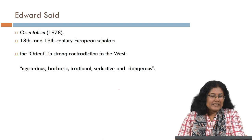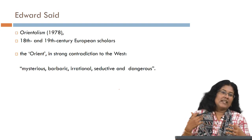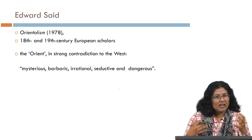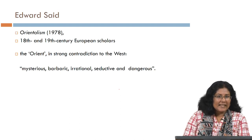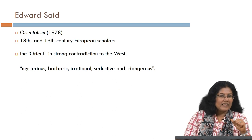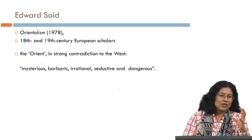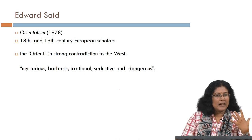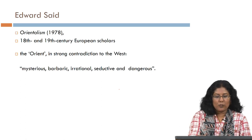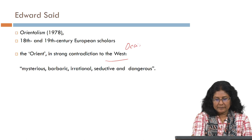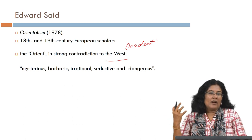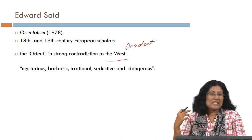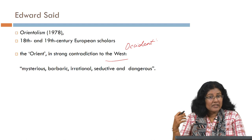Edward Said's Orientalism, published in 1978, is a landmark publication in this context. He formalized the category of the Orient as understood by the Western nations. He wrote that in the 18th and 19th centuries, European scholars described the Orient — the East — in strong opposition or contradiction to the West, known as the Occident. The Orient always meant mysterious, barbaric, irrational, seductive, and dangerous.